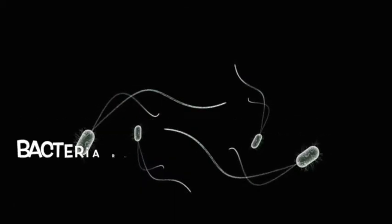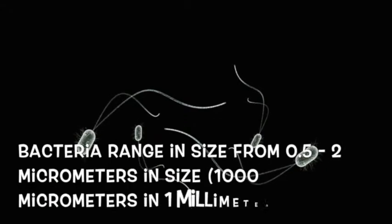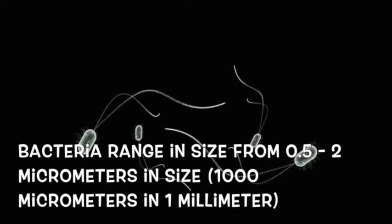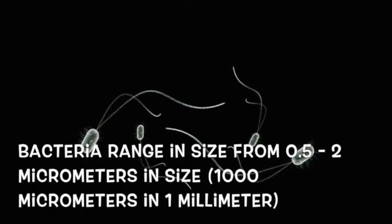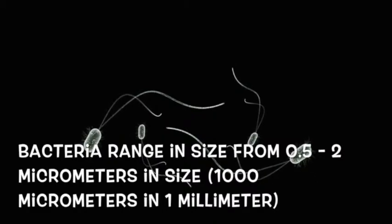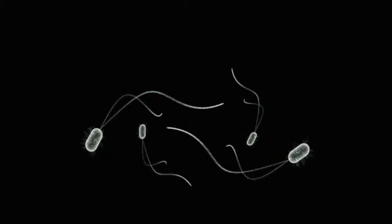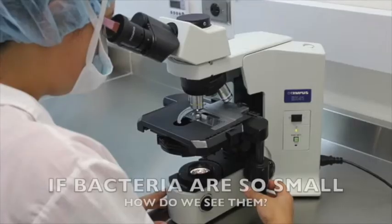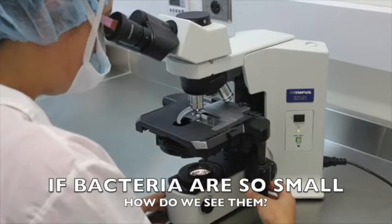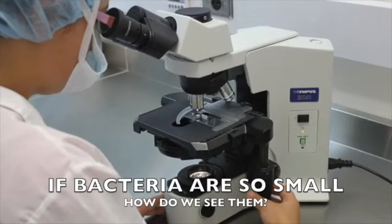They are about 0.5 to 2 micrometers in size. To give you an idea, a grain of sand is roughly 2 millimeters in size. This means that you could fit 1,000 bacterial cells into a single grain of sand, which means that you can only see bacteria cells through a microscope.